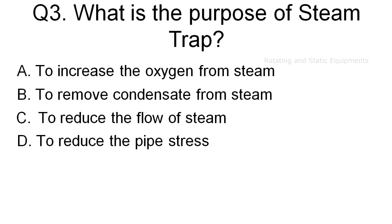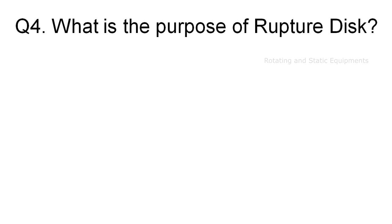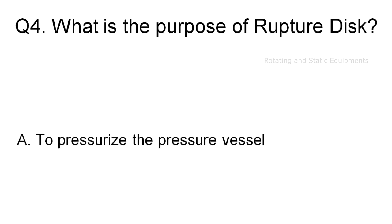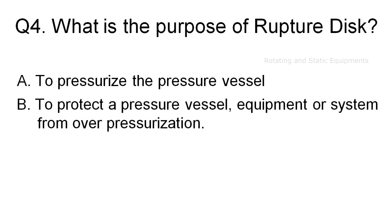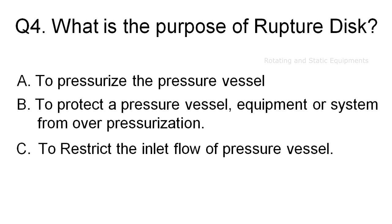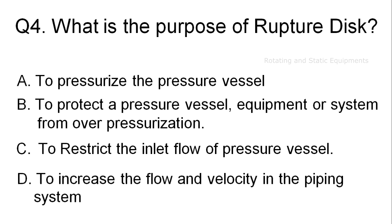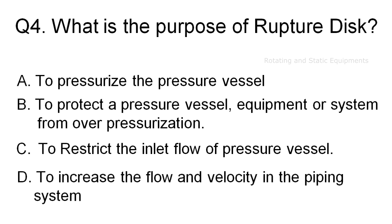Question 4: What is the purpose of a rupture disk? Option A: to pressurize the pressure vessel. Option B: to protect a pressure vessel, equipment, or system from over-pressurization. Option C: to restrict the inlet flow of a pressure vessel. Option D: to increase the flow and velocity in the piping system.